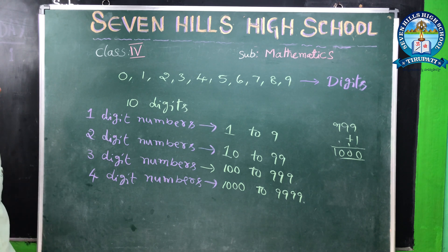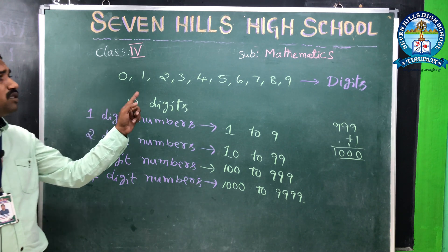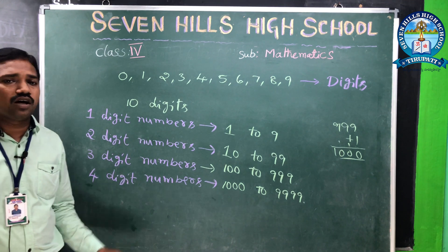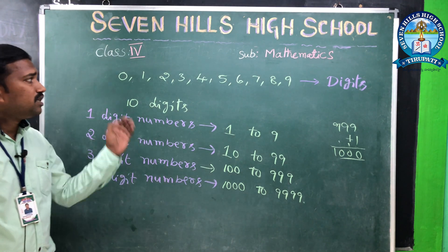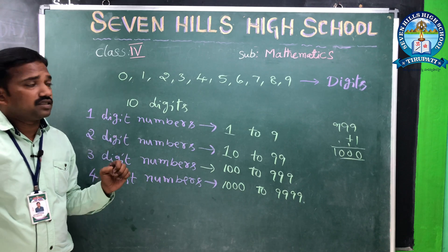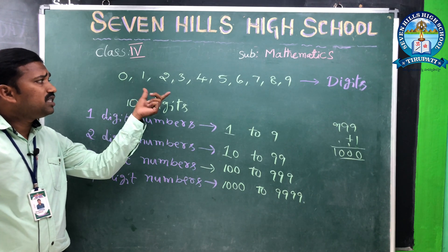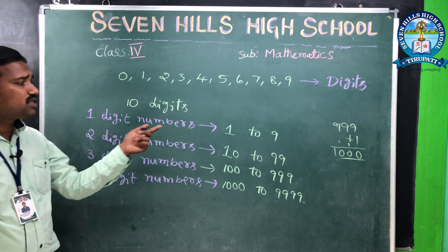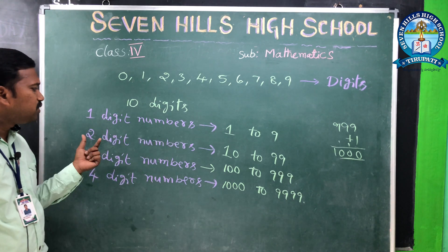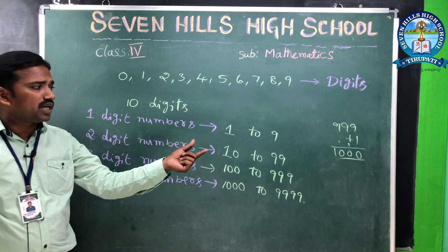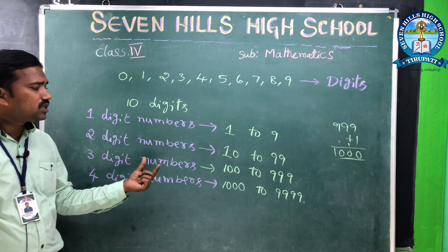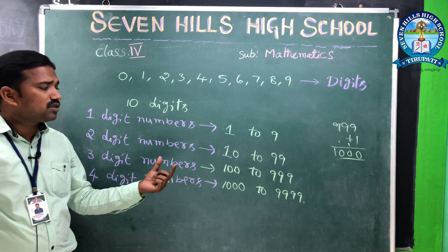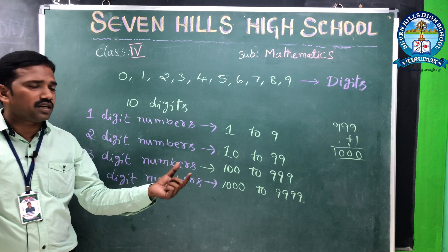Once again: 0, 1, 2, 3, 4, 5, 6, 7, 8, 9 are called digits — these are 10 digits. By using these digits we can form numbers. One digit numbers are 1 to 9, two digit numbers are 10 to 99, three digit numbers are 100 to 999, and four digit numbers are 1000 to 9999.